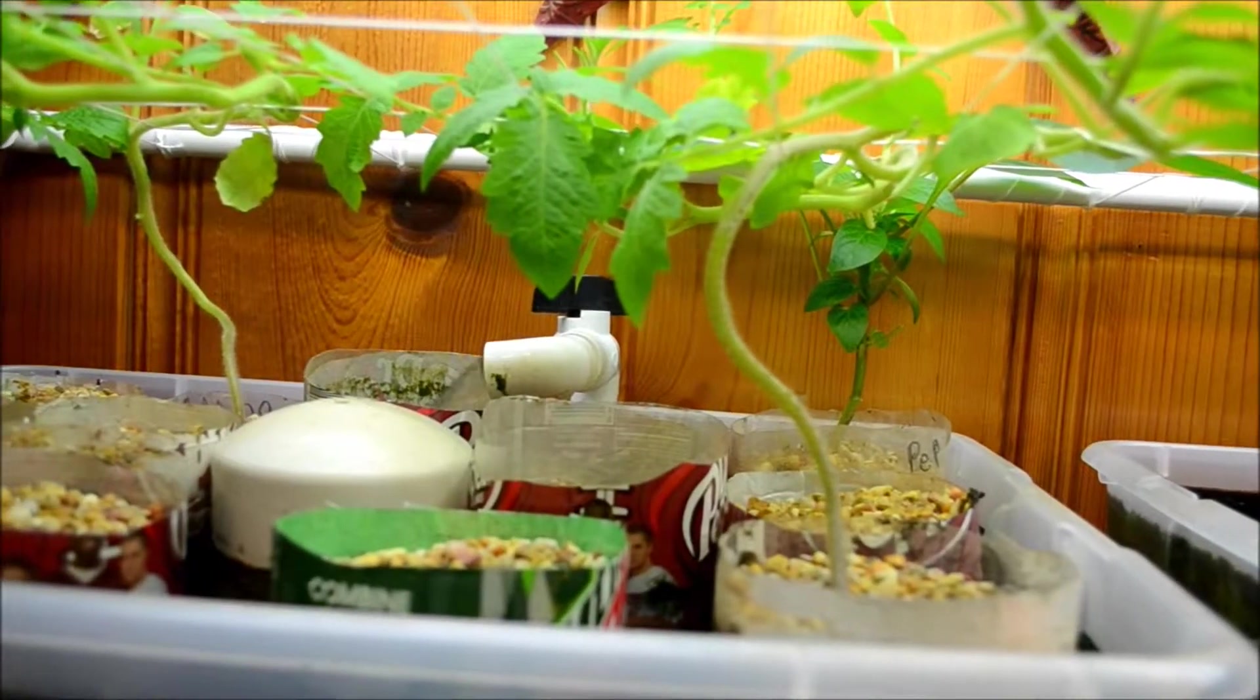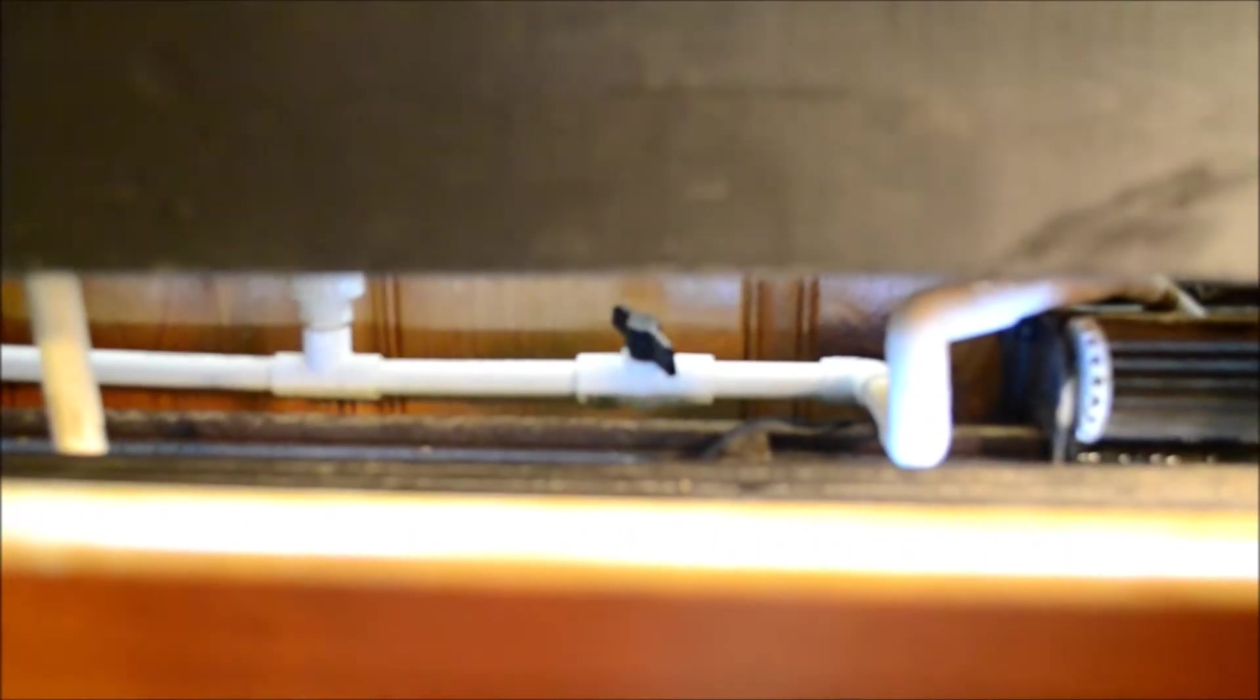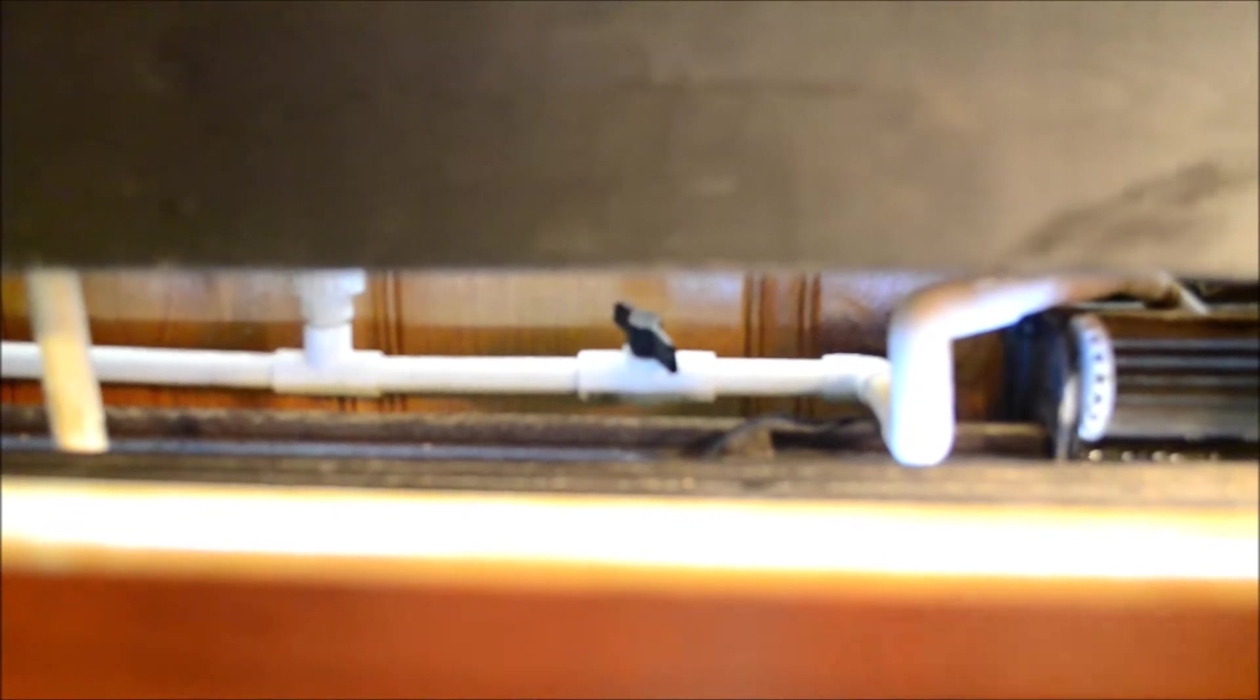All right, so in my system I have four cutoff valves. Two up here at the top of the grow bed, like I discussed, control the flow in the grow beds. I have these two mentioned - the one I mentioned before which is this one we're looking at, and then I have this one. And this is my tank return valve.